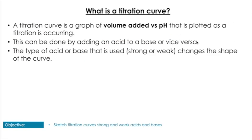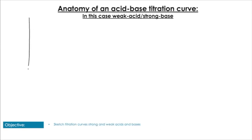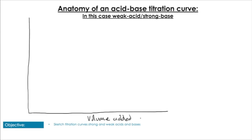A titration curve is a graph of volume added versus pH change while adding an acid to a base or a base to an acid. On the x-axis you have volume added in cm³, and on the y-axis you have pH. For this example with a weak acid and strong base, we start from a pH of about 2.